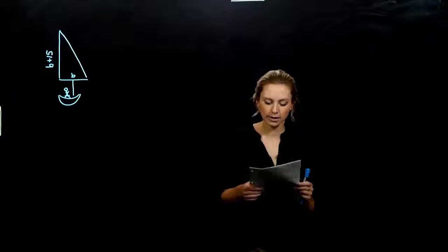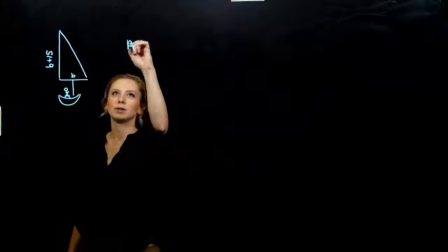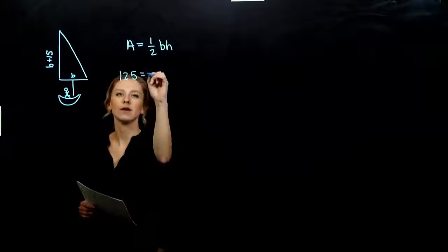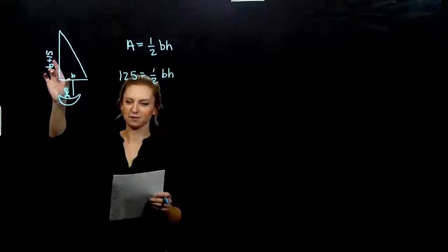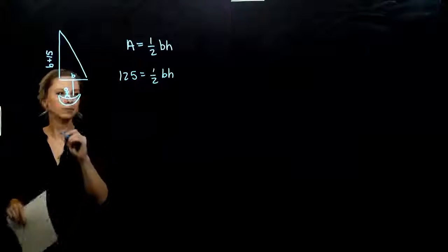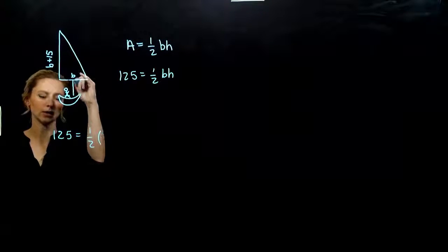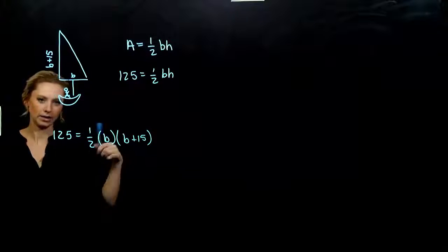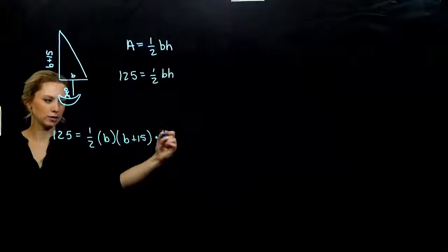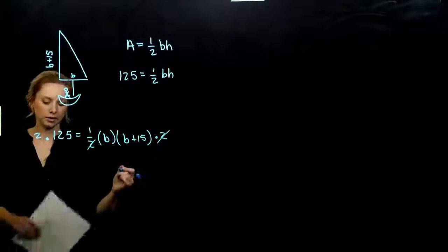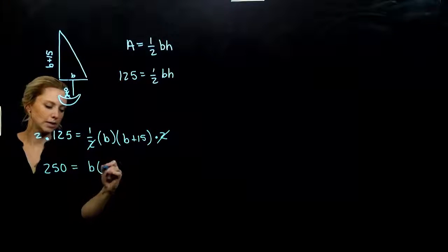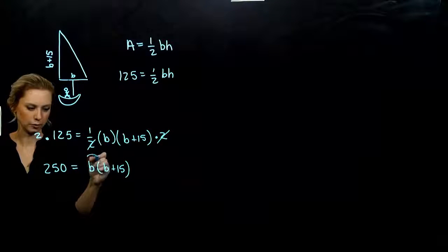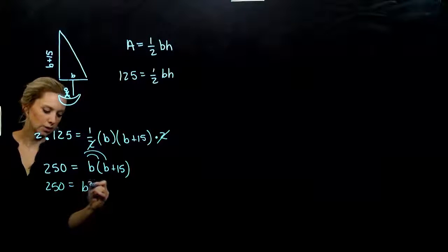The area is 125 square feet. Area of a triangle is one-half base times height. So 125 = (1/2)(B)(B + 15). To get rid of the one-half, multiply both sides by 2, giving 250 = B(B + 15). Distribute: 250 = B squared + 15B. Move 250 to the other side to keep the leading term positive: 0 = B squared + 15B − 250.